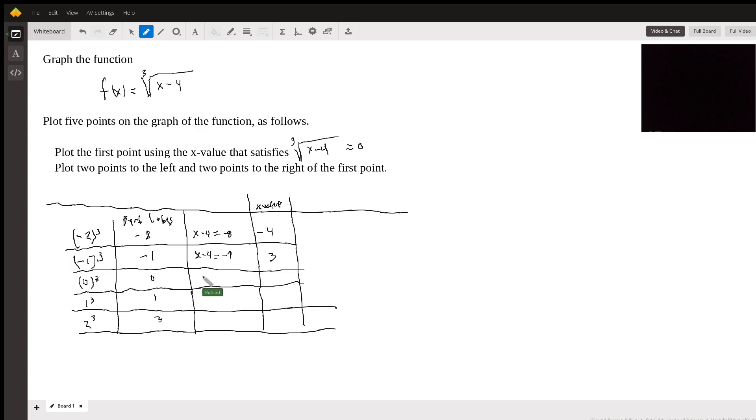Sorry about that. And then x minus 4 equals 0. So x equals 4. And then x minus 4 equals 1. So that would give us a 5. And then x minus 4 equals 8. Sorry. I don't know why I did that. 2 cubed is 8, of course. So x minus 4 is equal to 8. And so x is equal to 12 here.